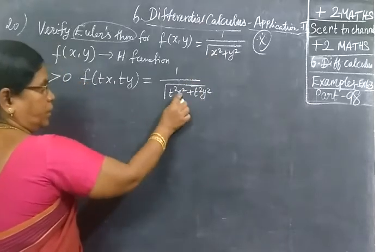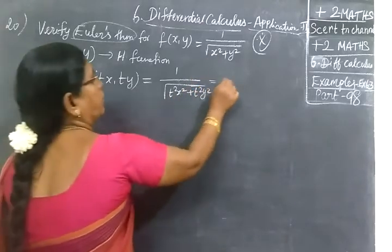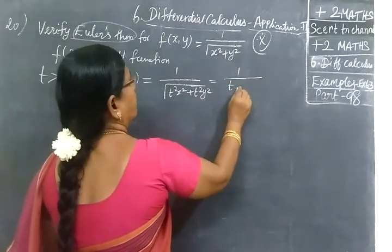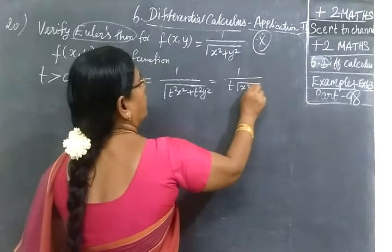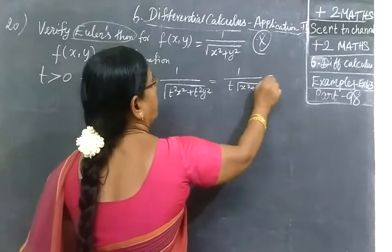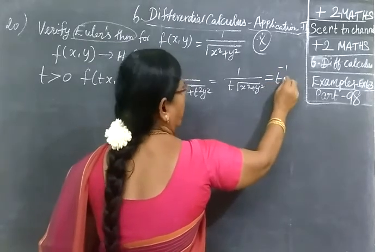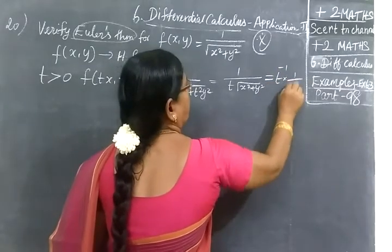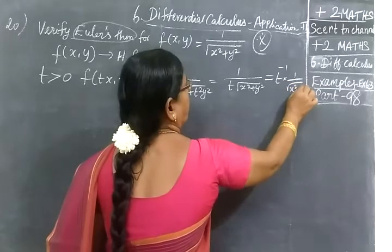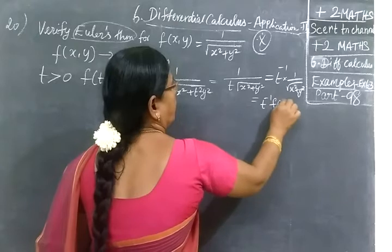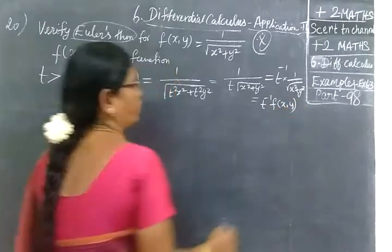For x² we are writing t²x². We can write t × 1/√(x² + y²). The t numerator can be written as t^(-1), 1/√(x² + y²). So this is equal to t^(-1)f(x,y).